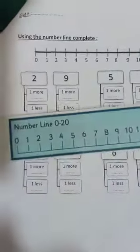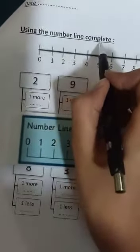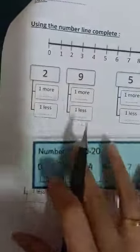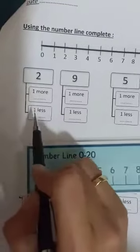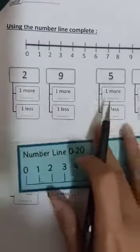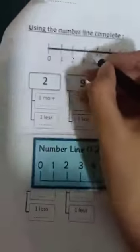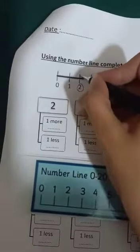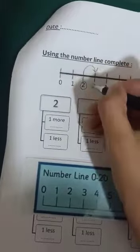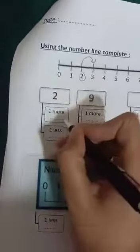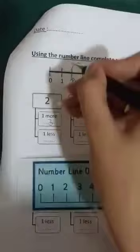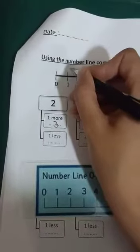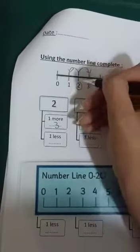Hello Junior One, please open page 24. Using the number line to complete: one more than two, and one less than two. Where is two on my number line? Here. One more than two — I will move one number forward. One more than two is three. One less than two — I will move one backward.